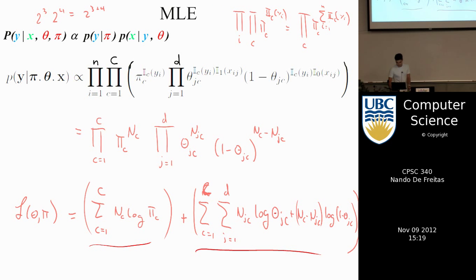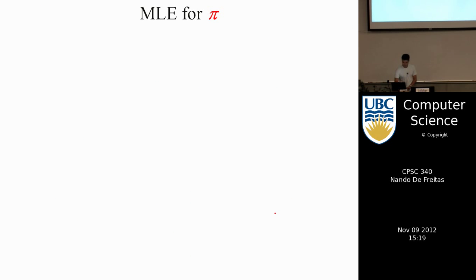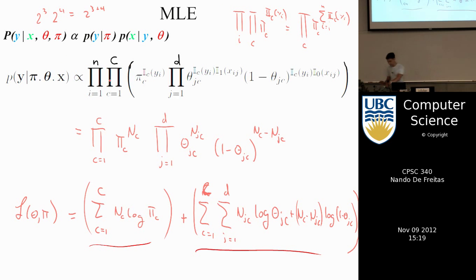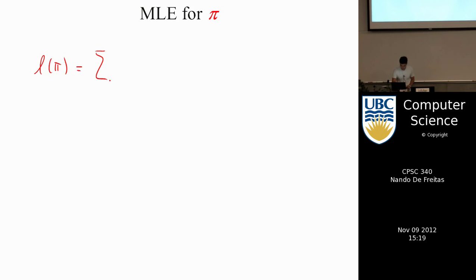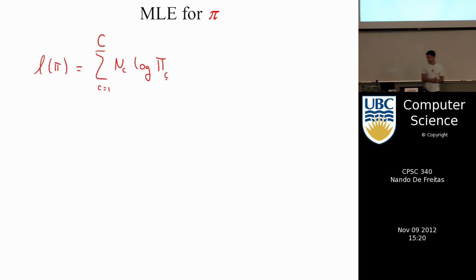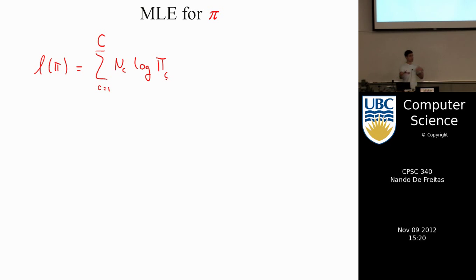π is a bit more interesting, so π is the first term. L(π) is equal to the sum from c=1 to C of n_c log(π_c), where π_c is the prior probability of class C. We learn π_c — the prior probability — and that in the end allows us to compute the posterior probability, which is what we care about. The posterior is what you use to decide whether the tweet is positive or negative.